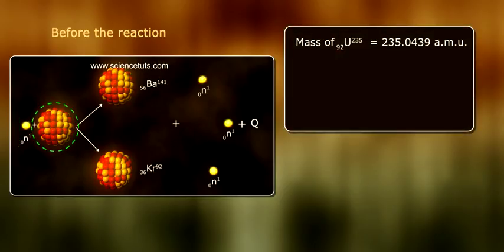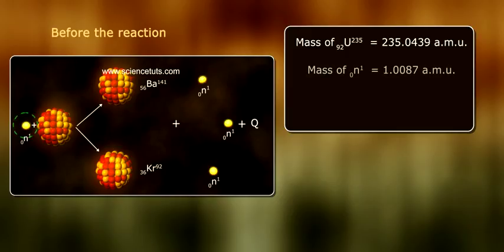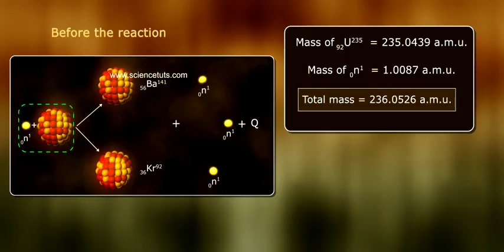Before the reaction: Mass of 92U-235 equals 235.0439 atomic mass units. Mass of neutron equals 1.0087 atomic mass units. Total mass equals 236.0526 atomic mass units.